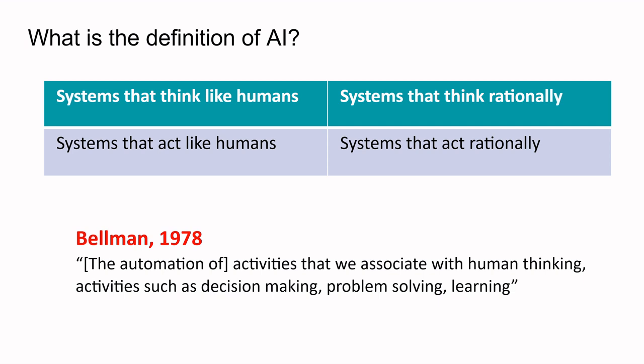Various authors have given different definitions of AI. The first definition is the automation of activities that we associate with human thinking — activities such as decision making, problem solving, and learning. Similarly, if a machine is also able to perform these activities like decision making, problem solving, and learning, then we can say that system or machine is artificially intelligent.